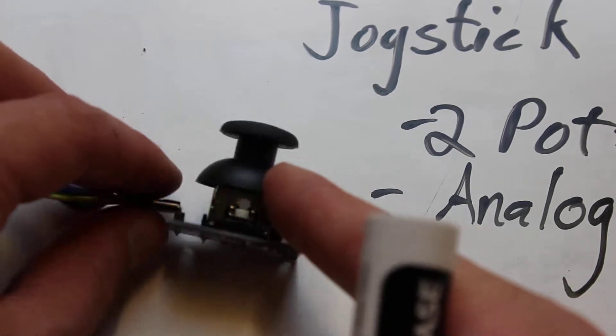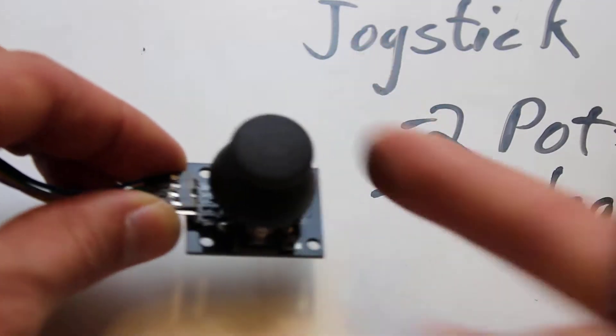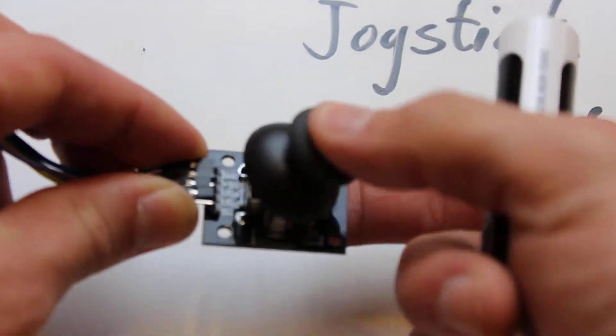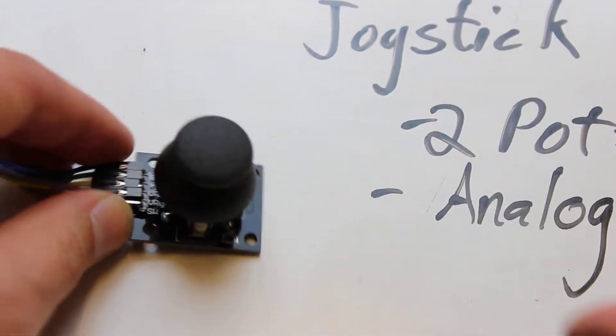Basically inside here, you have a potentiometer that is going this direction and a potentiometer that's pointing this direction so that you have bidirectional information gathering.